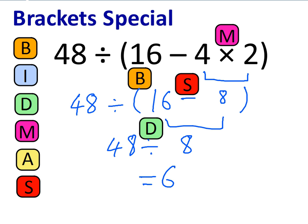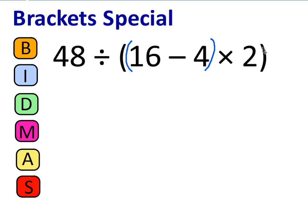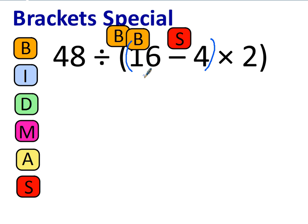The same thing applies if you have an extra set of brackets inside another pair of brackets. Let's change that slightly: 48 divided by brackets, open another pair of brackets, 16 take away 4, close brackets, times 2, close brackets. Inside the first set of brackets we've got another set of brackets with a subtraction — that's the first thing that needs to get done. 16 take away 4 is 12.